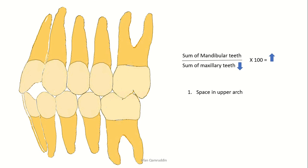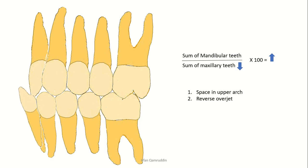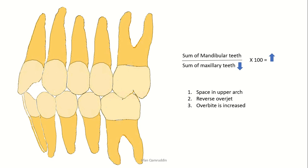If a patient has a missing lateral incisor and a disturbed Bolton discrepancy, there will be space in the arch. If you try to close this space while keeping the canine and molar in Class I relationship, you will have to retract the incisors, resulting in a reverse overjet. Additionally, since lower incisors tend to extrude without contact, overbite may also be disturbed. To close the space while keeping overjet and overbite normal, you would have to move the upper canine, molars, and total arch into a Class II relationship.